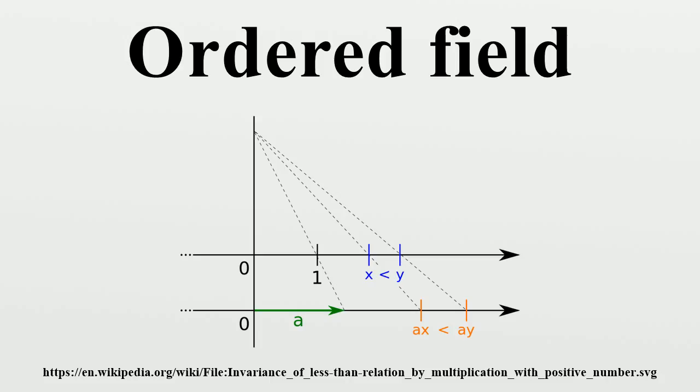Every subfield of an ordered field is also an ordered field in the inherited order. Every ordered field contains an ordered subfield that is isomorphic to the rational numbers.